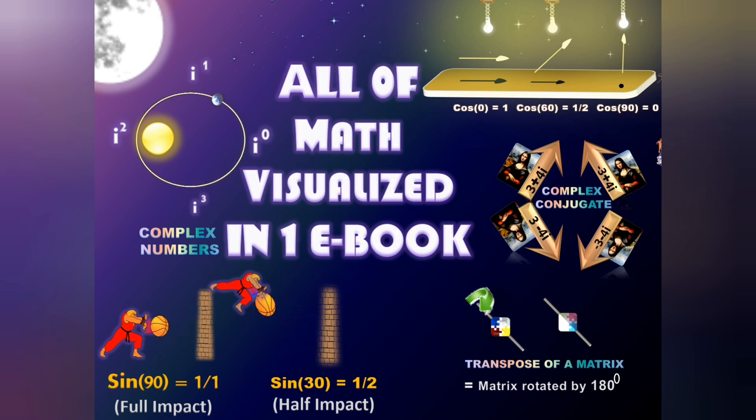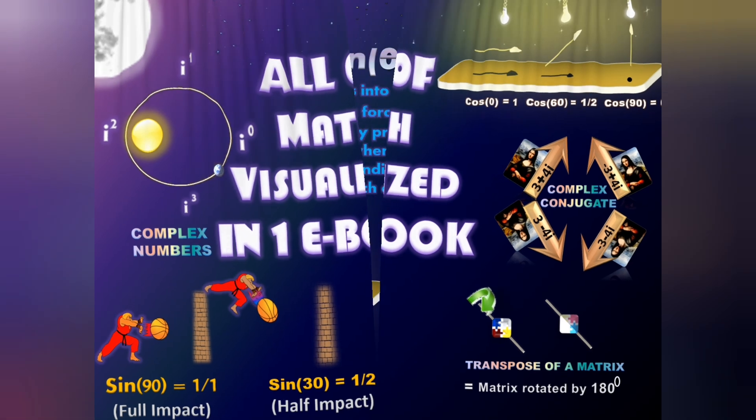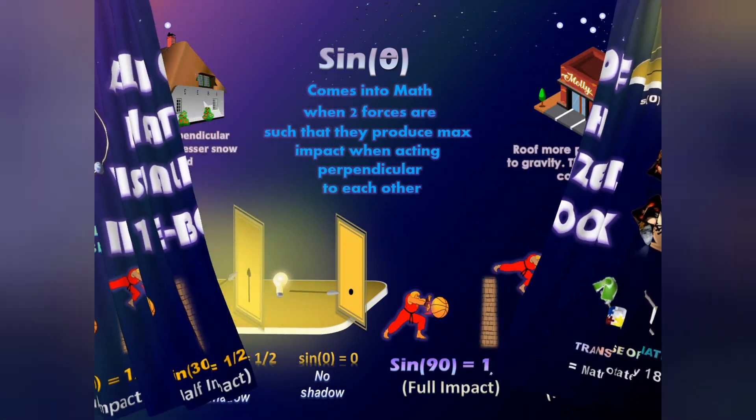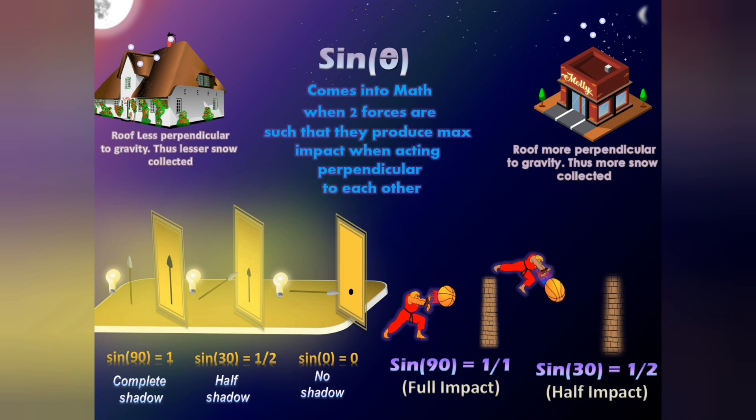What if sine theta is a measure of how much perpendicular two forces or objects or influences are with respect to each other? So a roof which is perpendicular to the flow of snow, won't it collect more snow than a roof that is less perpendicular?